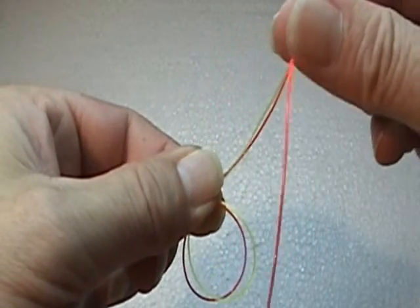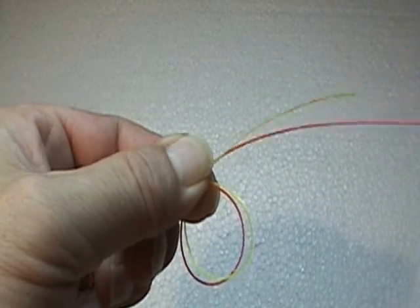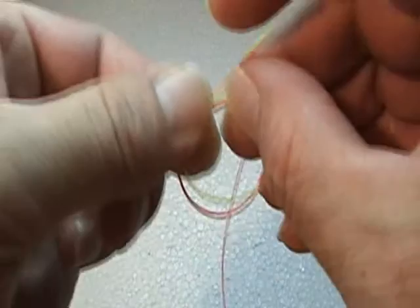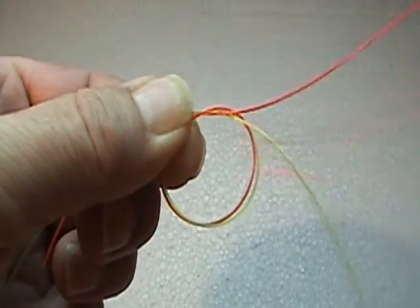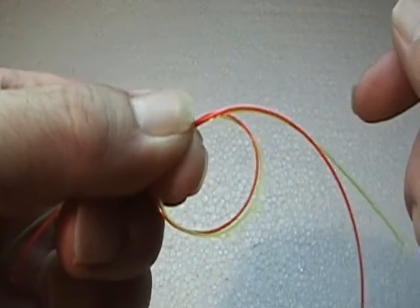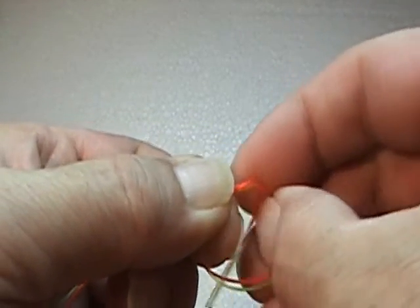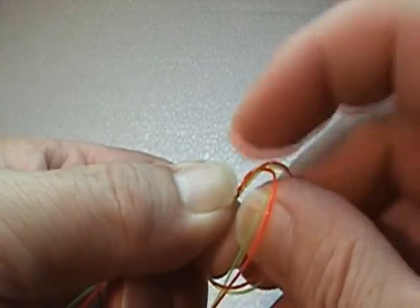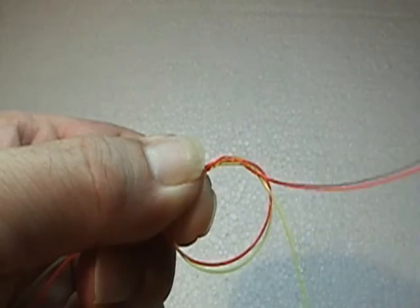I'm going to take the butt end of my leader, the yellow, and the whole red, my whole tippet, and I'm going to go through that loop twice. There's once, and there's twice.